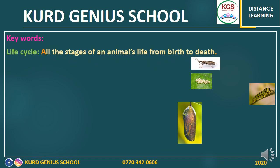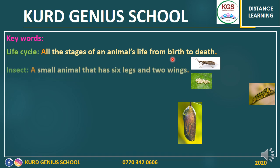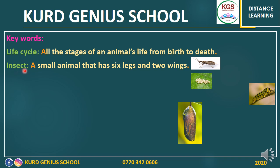Here we have key words. The first one is life cycle. What is life cycle? All the states of an animal's life from birth to death. It means that all animals have some states in their life and all of them together are called life cycle. The second key word is insect — a small animal that has six legs and two wings.